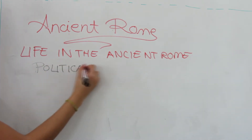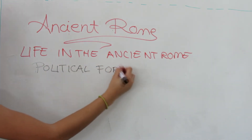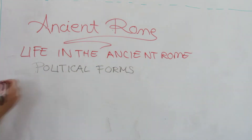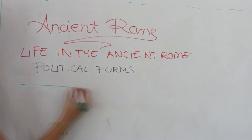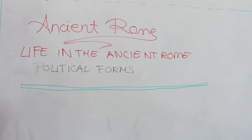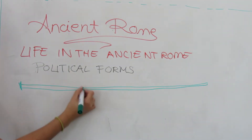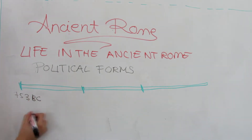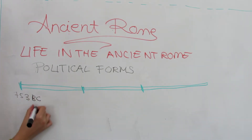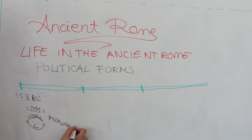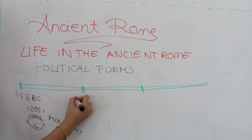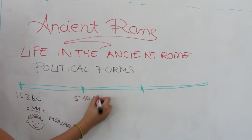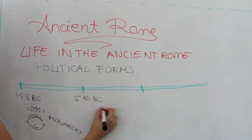Roman Monarchy was the first political form of government of the city-state of Rome. From the legendary moment of its foundation in 753 BC until the end of the monarchy in 510, when the last king was exiled, establishing the Roman Republic.